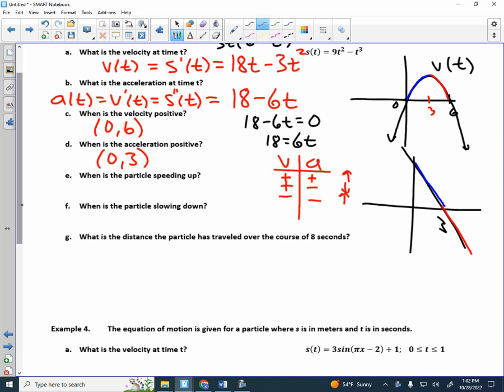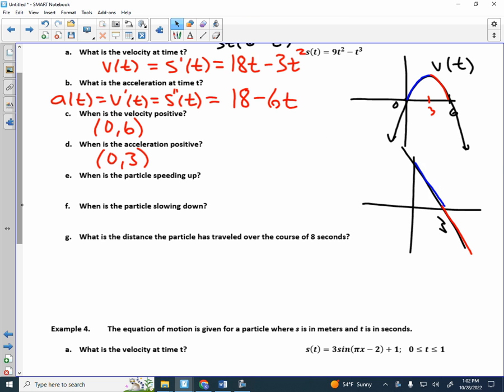So if you notice, what determines if I'm speeding up or slowing down? If the signs are the same, then I'm speeding up. It's kind of like forces that are acting together. If velocity is positive and acceleration is positive, it makes us go faster. If velocity is negative and acceleration is negative, it makes us go faster. But if they're opposing forces, we're slowing down. So the question is, when is the particle speeding up? That's going to be when the velocity and the acceleration have the same sign.